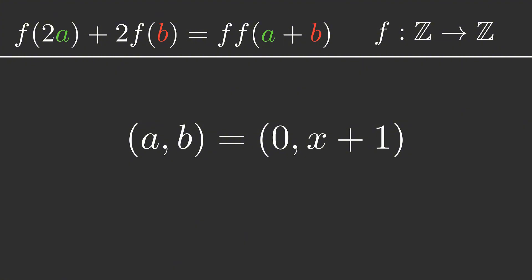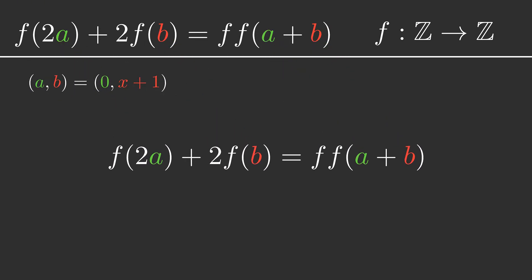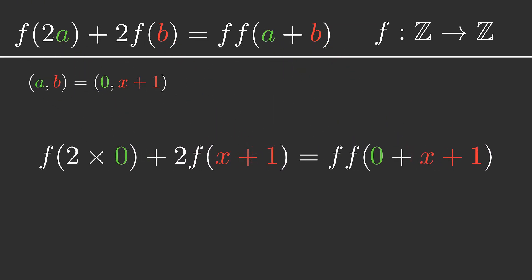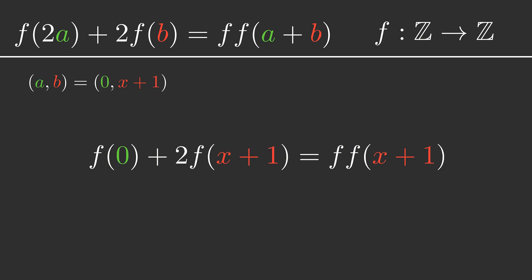So let's see what happens if we let a be zero and b be x plus one. Quick note, x means any integer. We'll stick these in the relationship we've been given and simplify all the expressions inside the brackets which gives us another relationship that describes the behavior of f.